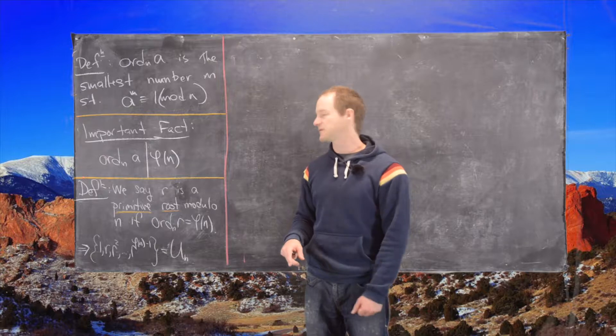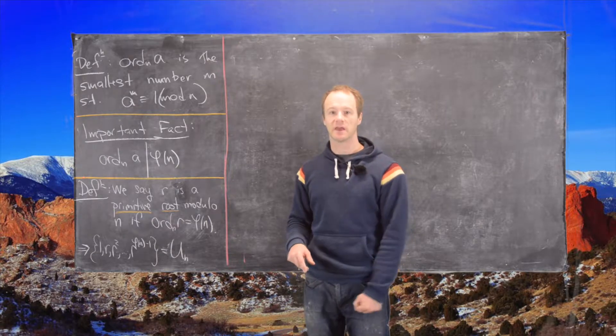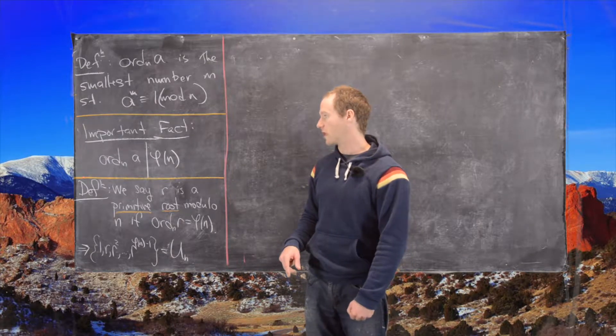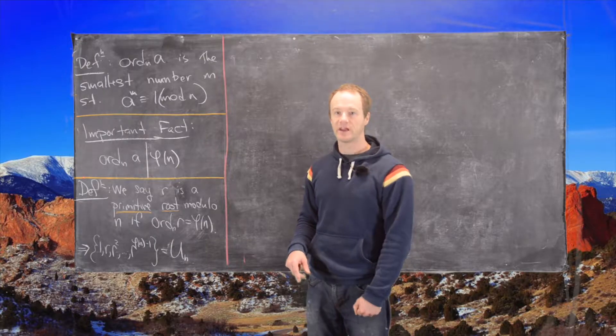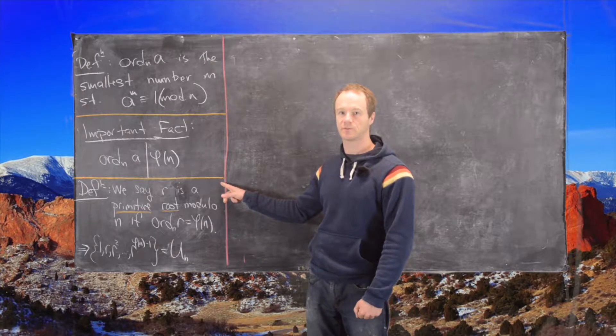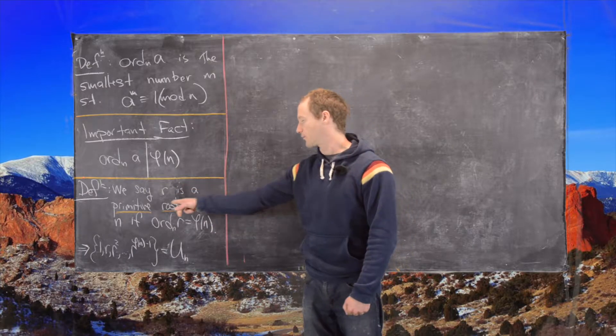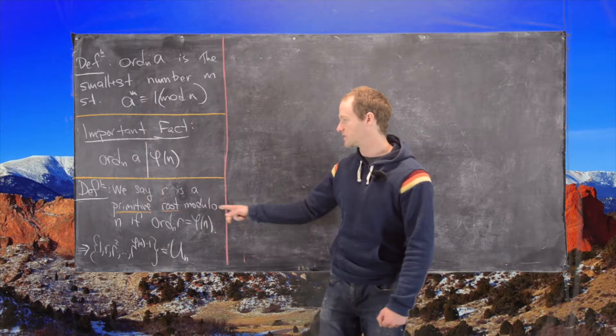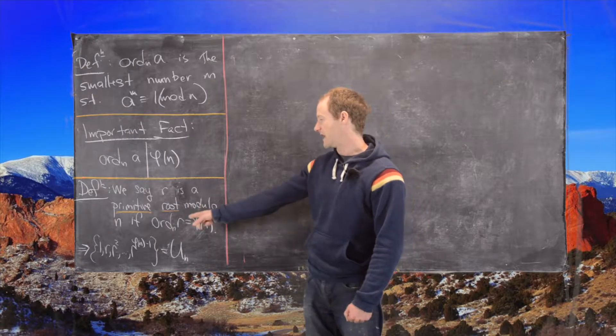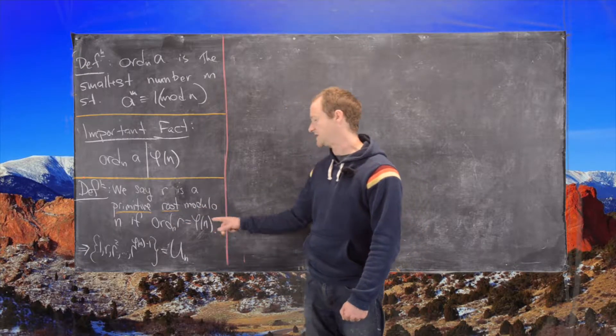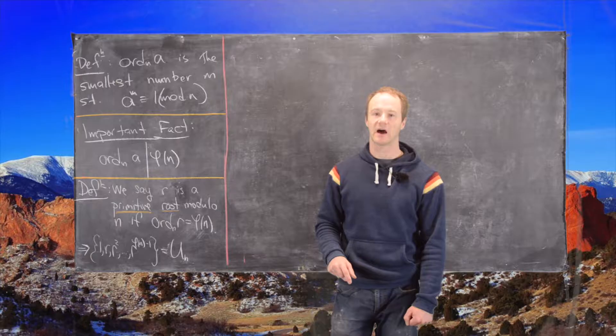And that upper limit is important and that brings us to the next definition which is the following. So we say a number r is a primitive root modulo n if its order modulo n is phi of n. So if we hit that upper limit.